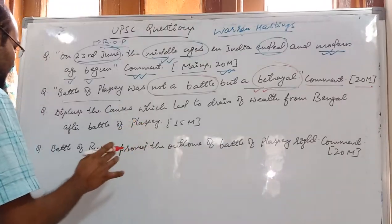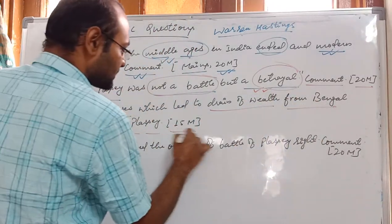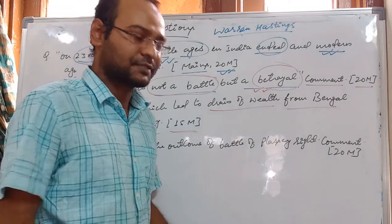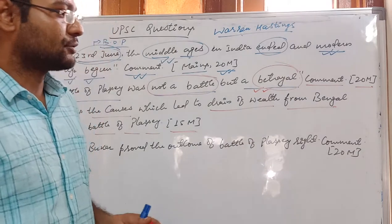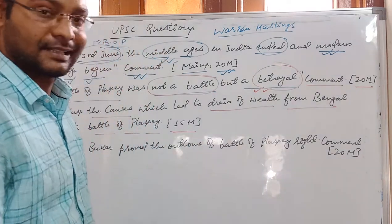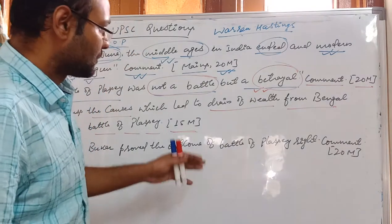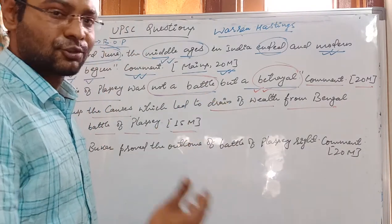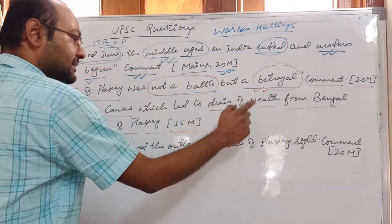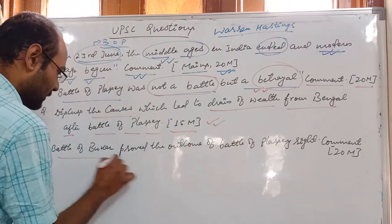The next question — asked for 15 marks — was: 'Discuss the causes which led to the drain of wealth from Bengal after the Battle of Plassey.' After Plassey, Mir Jafar gave fabulous tributes to East India Company officials and Robert Clive — a total of £8 lakh carried in 20 ships. Then there was the diwani of 24 Parganas and Nadia district, misuse of the dustak by company officials, and the ruining of Indian handicrafts.